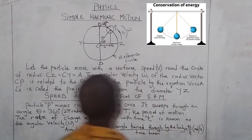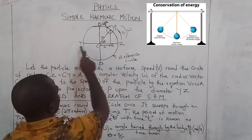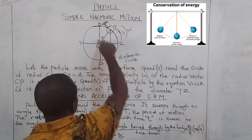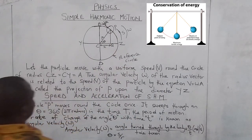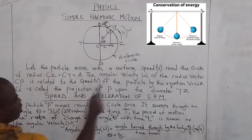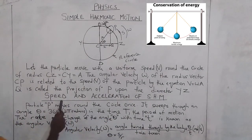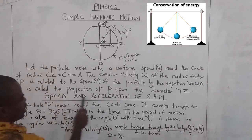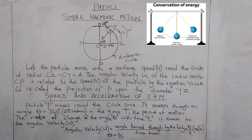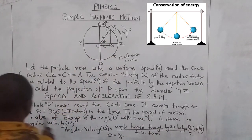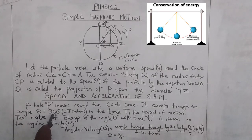You can see from the diagram that CY, CZ, and CP are all radii. The object moves at a particular uniform speed, and as a result of simple harmonic motion, particle P moves around the circle once, and it shifts through an angle theta equals 360 degrees or 2 pi radians in time t.